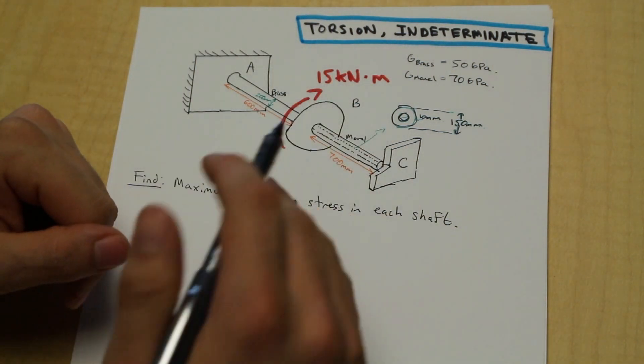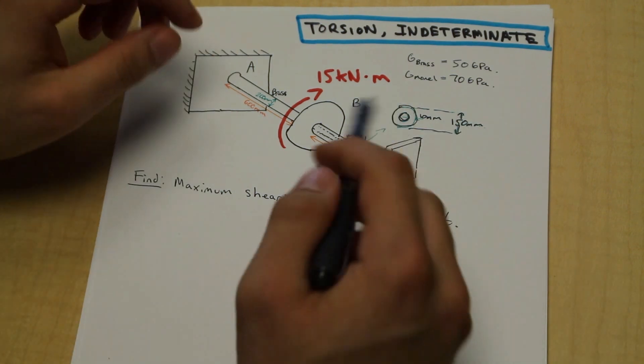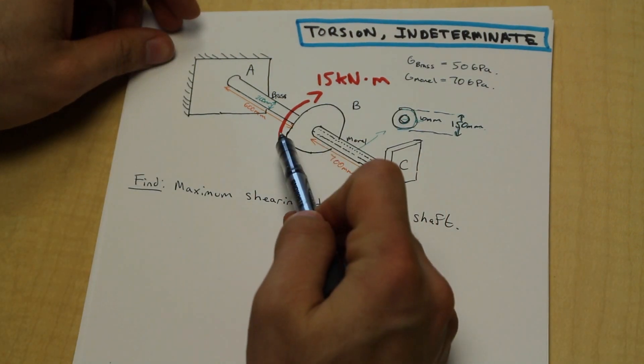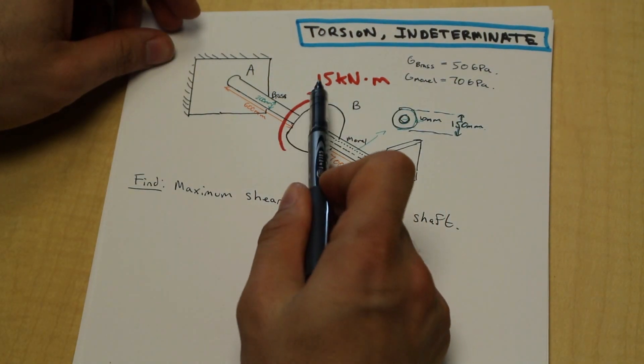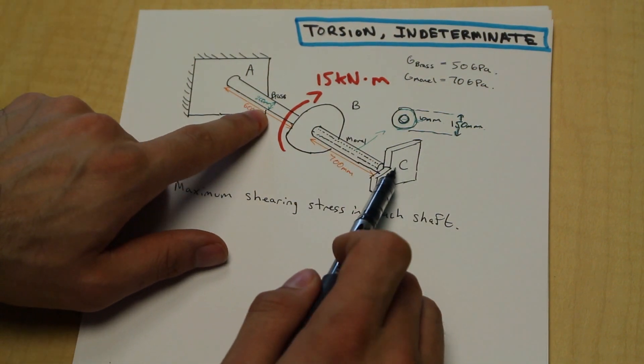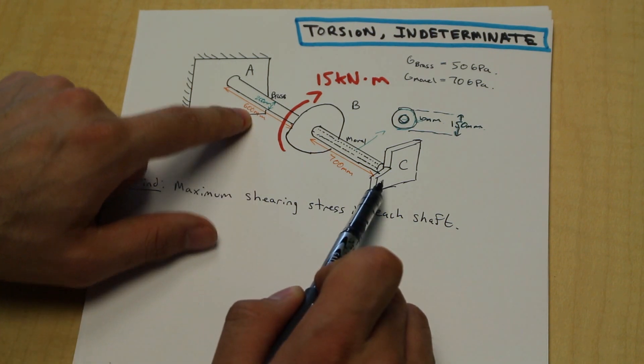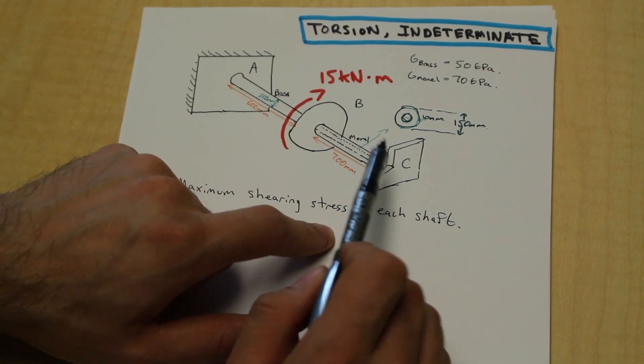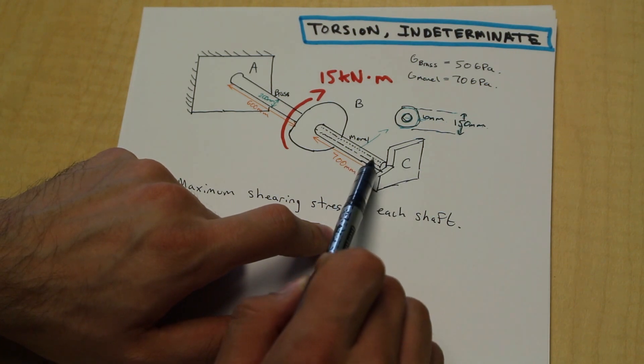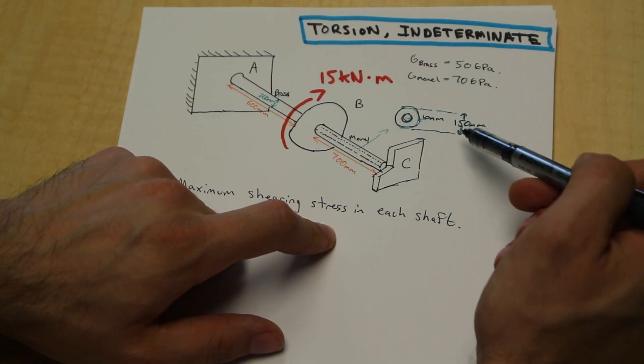All right, knowing that we can start to solve the problem. So we've drawn out this diagram here, we have a disc in the center with a positive torque of 15 kilonewton meters acting on it. We have a brass shaft of 200 millimeters in diameter and 600 millimeters long from A to B.